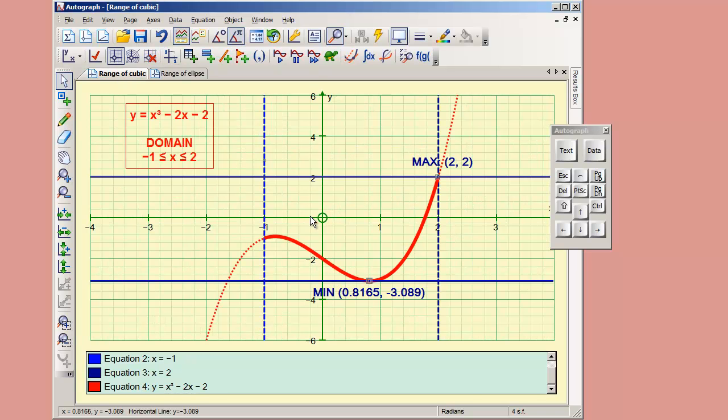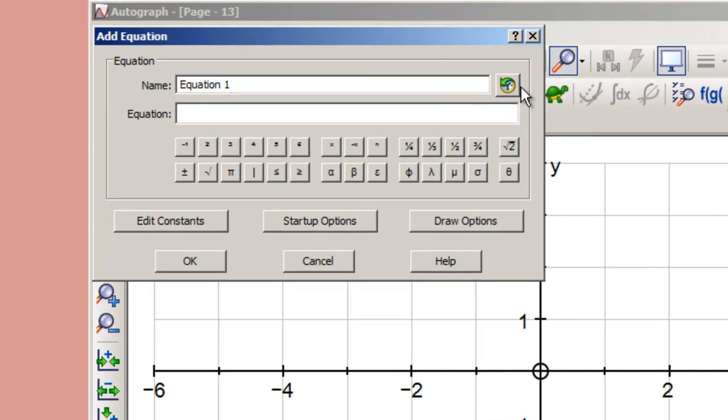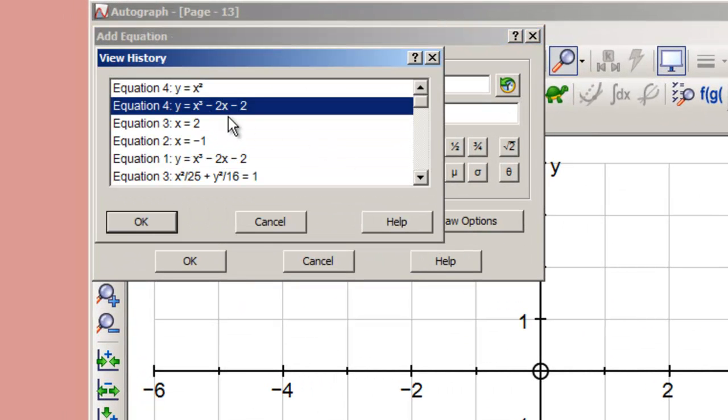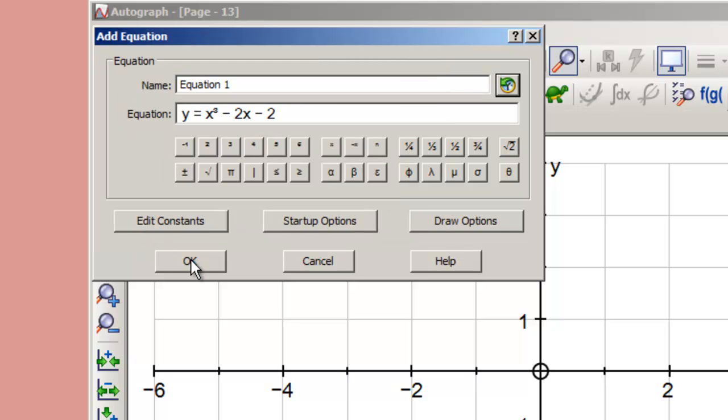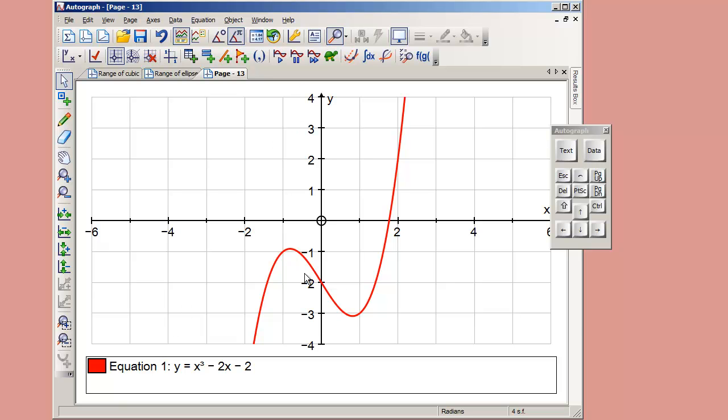First we'll start this diagram from scratch so you can see how it's built up. Enter an equation, and here is the equation x cubed minus 2x minus 2. I'm going to click OK, and there's no need for a slow plot.